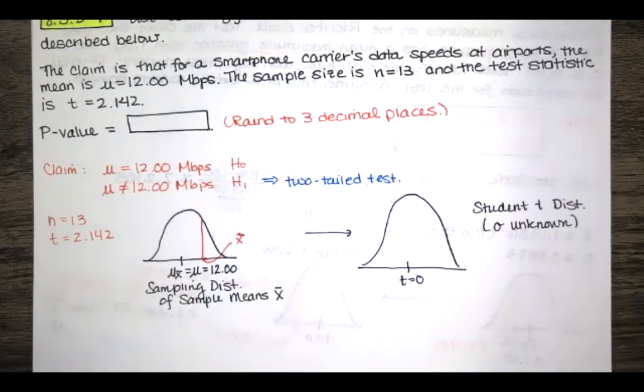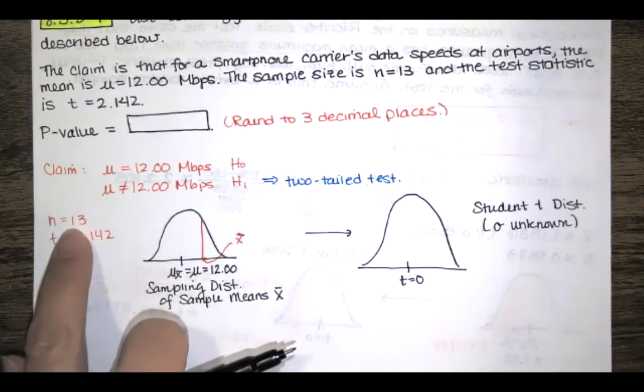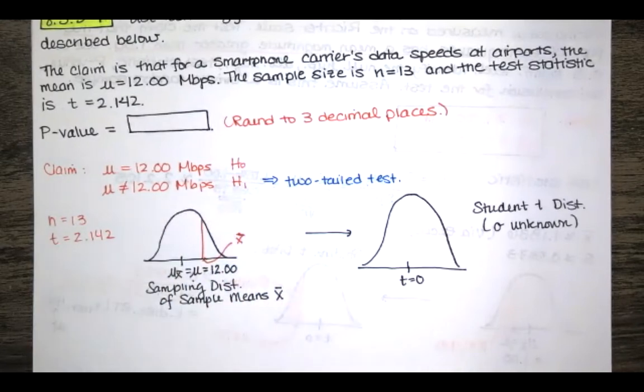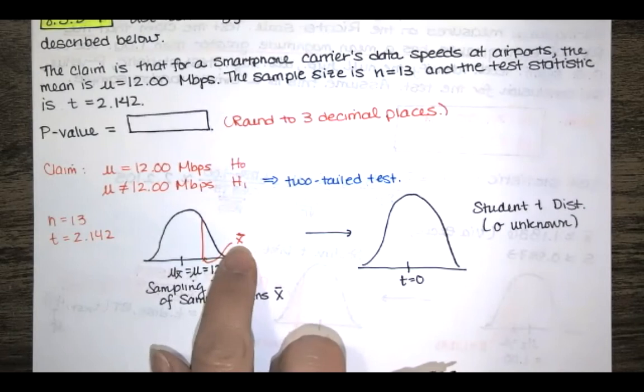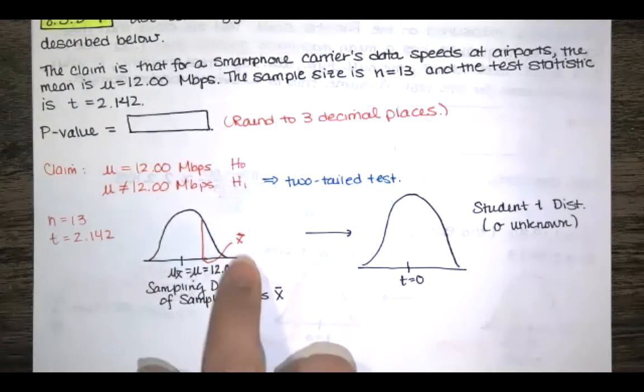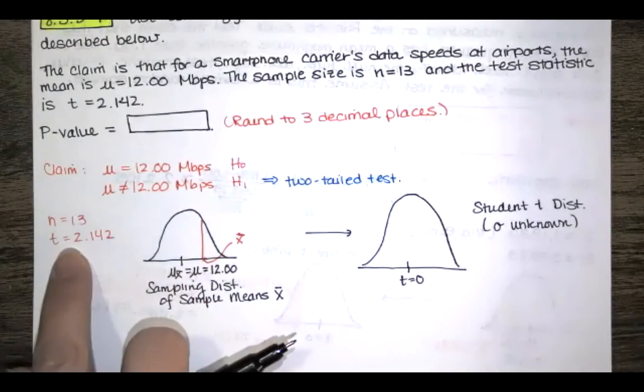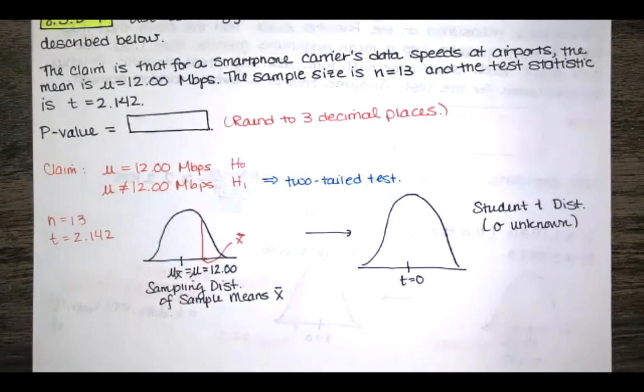So what else what are we told? Well we are told that we have a sample size of 13 which is related to this and then we're told that this x bar we don't actually even know what x bar is it wasn't given in the problem statement but it corresponds to t equals 2.142.